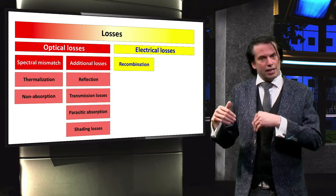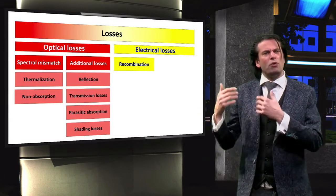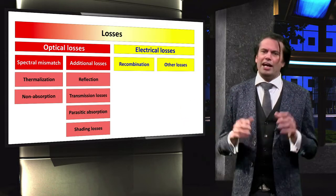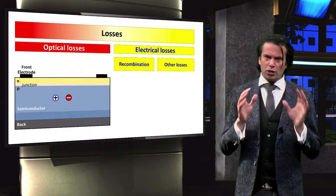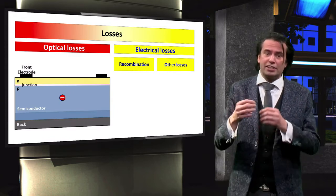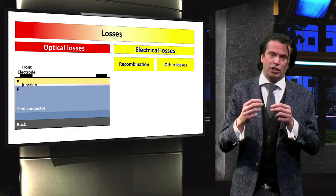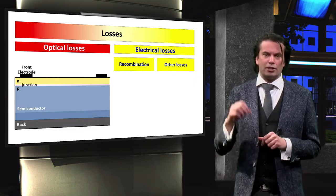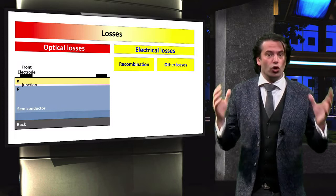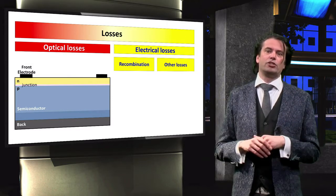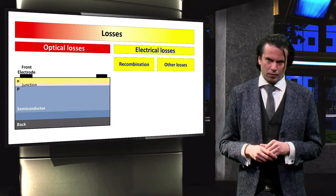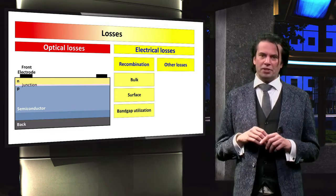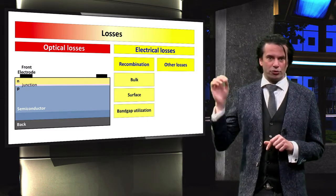In the electrical losses section, we consider recombination losses and other losses. Recombination losses occur when an electron after excitation falls back to its initial energy state. If this happens, that absorbed energy is essentially lost and cannot be converted into electrical energy. We will discuss three special cases of recombination in the section on semiconductor physics.